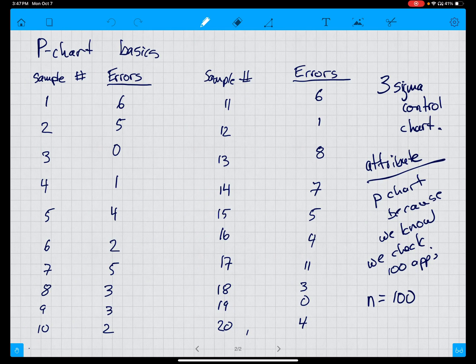If we go back here and we add up 6, 5, 0, 1, 4, 2, 5, 3, 3, 2, 6, 1, 8, 7, 5, 4, 11, 3, 0, 4, we would get 80 errors. So that's the total number of errors.